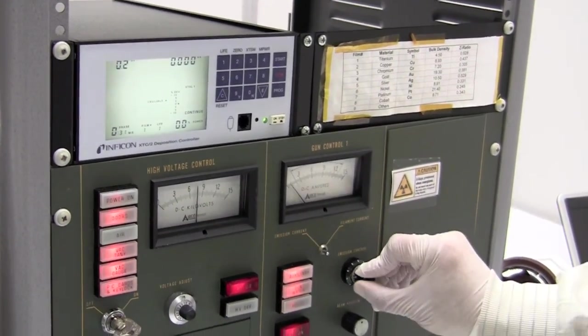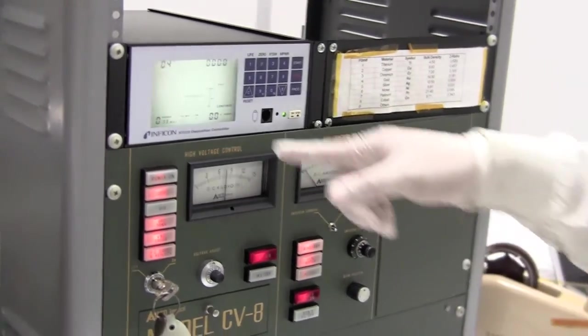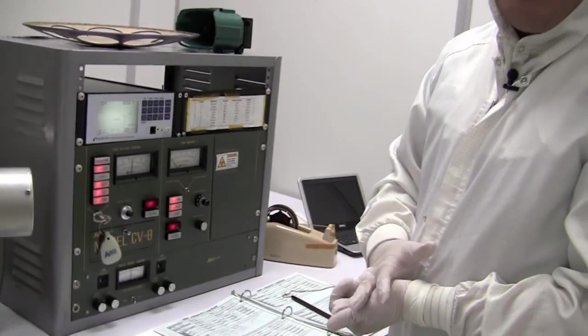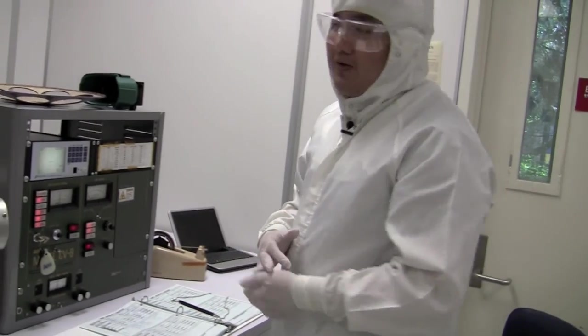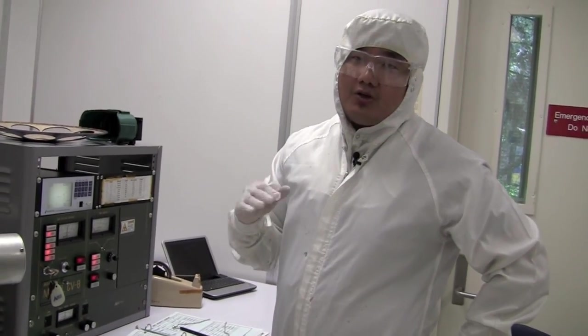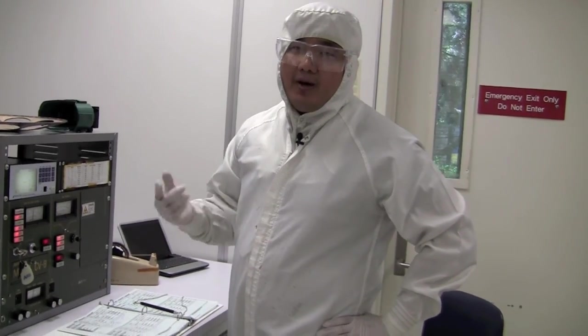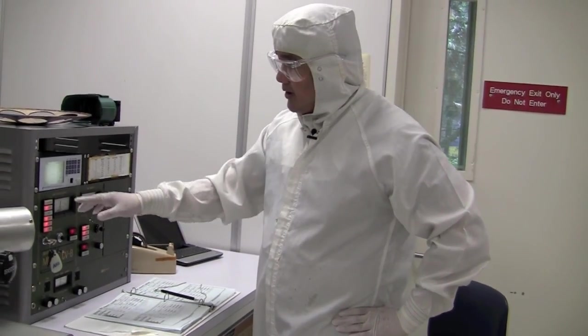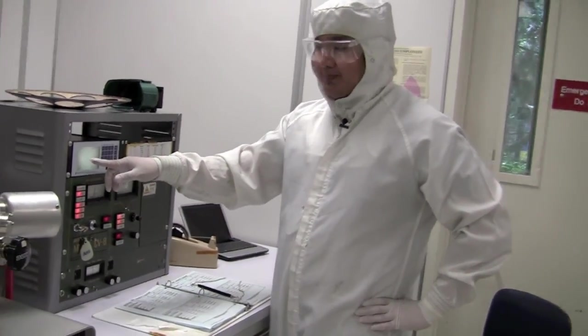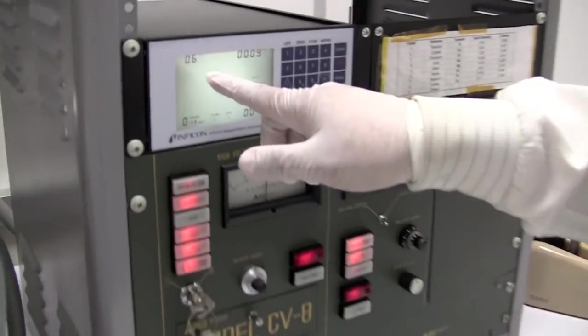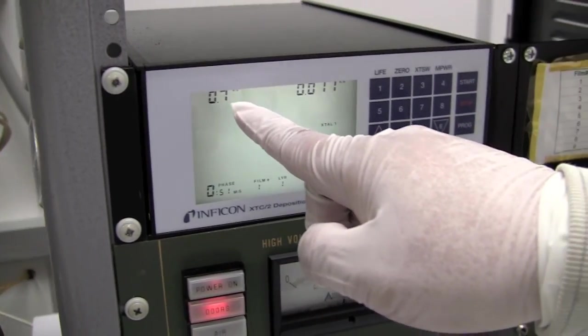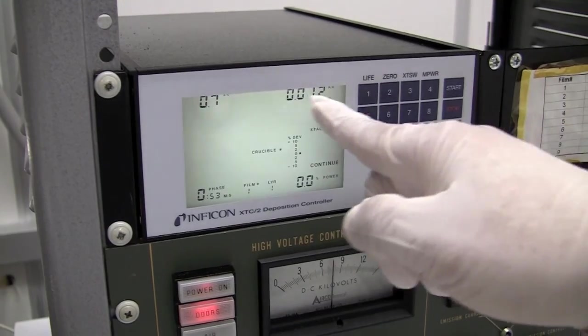So you bring the current back to its original melting level. You can see it's depositing at 0.1, 0.2. So we try to keep, in the beginning, we try to keep the current at around maybe 0.4 angstrom per second. Then after you've deposited about 100 angstroms or 200 angstroms, you can increase the current. So your rate is now about 1 angstrom per second. So you can watch the rate here. We're depositing at 0.7 angstroms per second. And this is how much we've deposited.